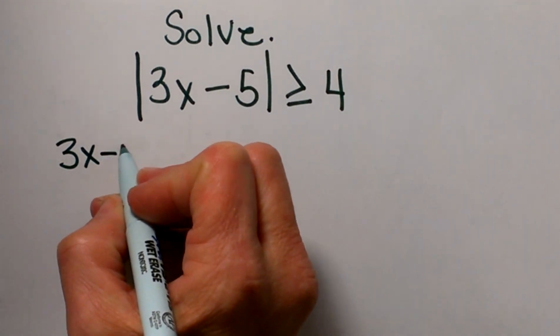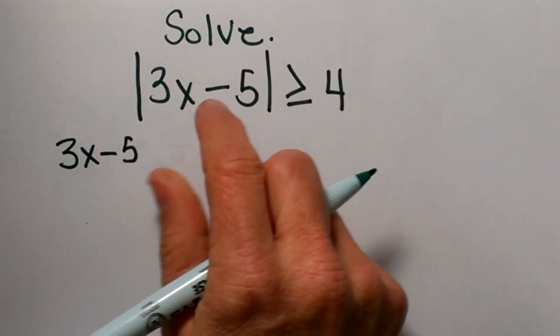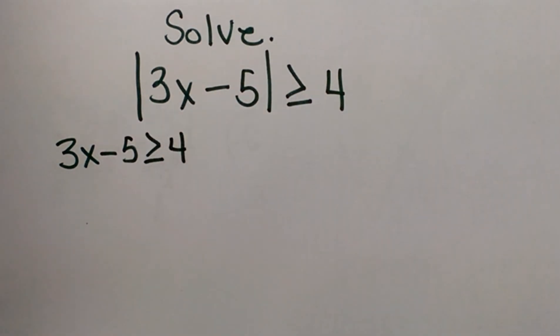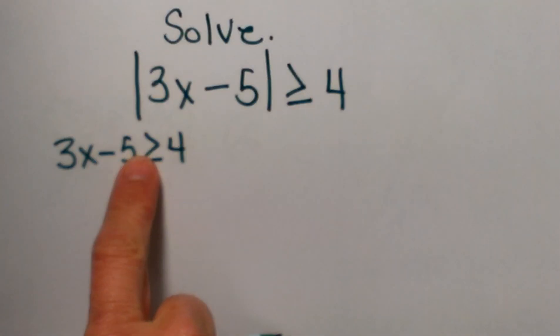So what I'm going to do is take the expression straight out and just write it without the absolute value bar. That's going to be case 1.